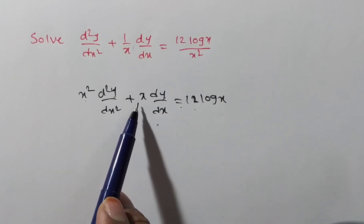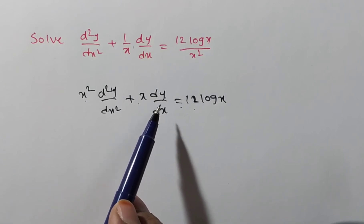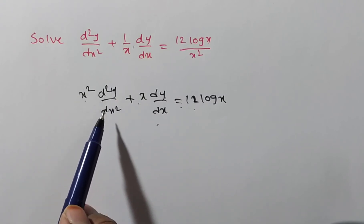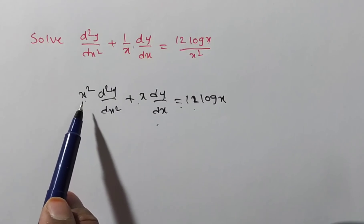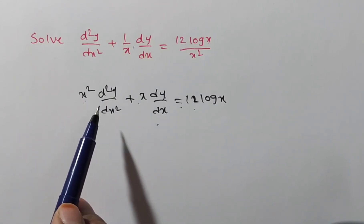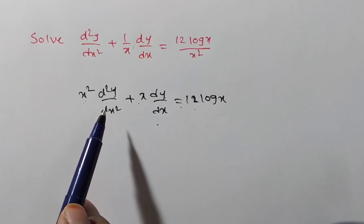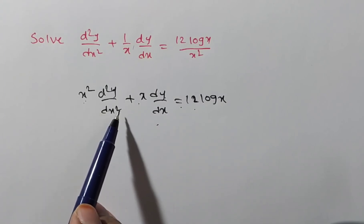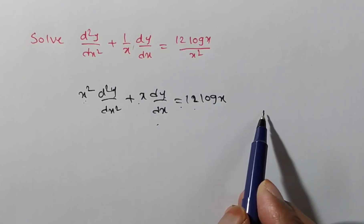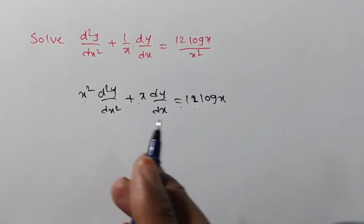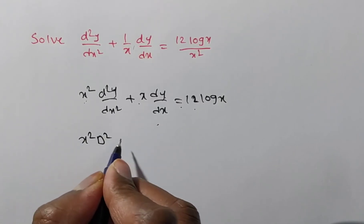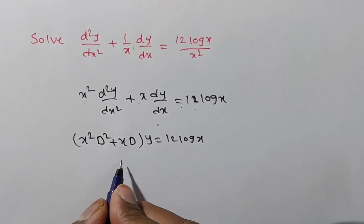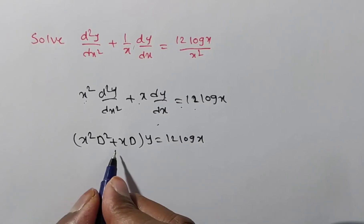By observation, this is a higher order differential equation. Notice the coefficient of dy/dx is x (order 1, index 1) and the coefficient of d²y/dx² is x² (order 2, index 2). So this belongs to the Euler-Cauchy homogeneous linear differential equation — a differential equation with variable coefficients. In operator form: (x²D² + xD)y = 12·log(x), which is of the form f(D)·y = Q(x).